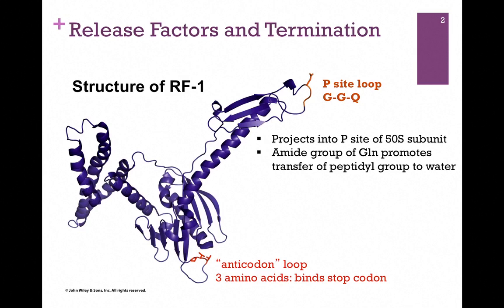Look at the bottom of the screen. You'll see what's referred to as the anticodon loop, highlighted in orange. Anticodon is in quotes because this isn't a nucleotide. Remember, this is a protein, so this is a sequence of three amino acids that will interact with the three bases in the stop codon.